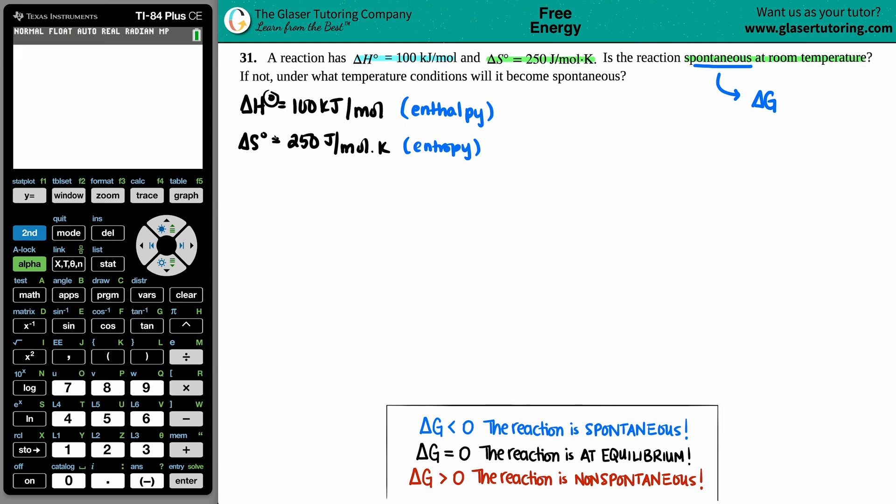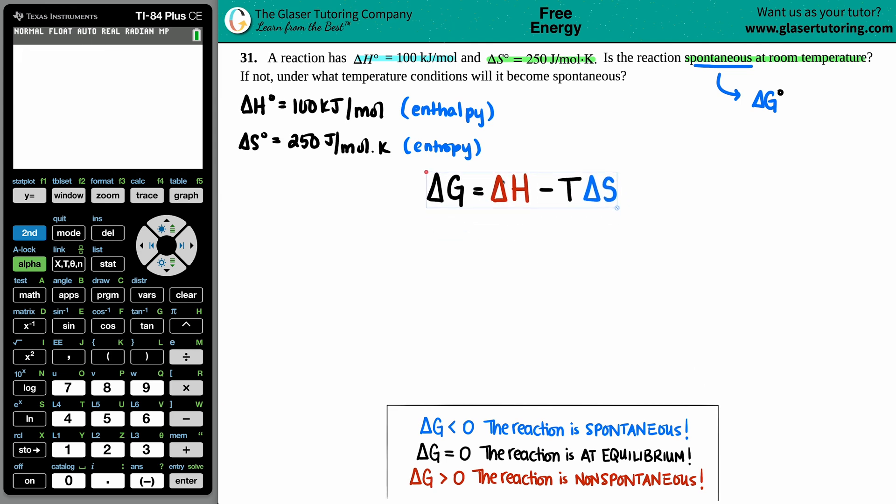In this case, since we have notches, these degree signs, that means we're under standard conditions, we're going to find a delta G notch as well. If your H and S values are standard, your delta G value is going to be standard as well. Is there any formulas that have delta G, delta H and delta S value in it? There's only one: delta G equals delta H minus T delta S.